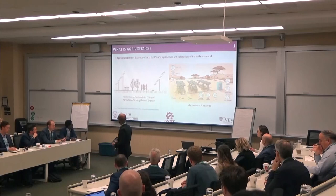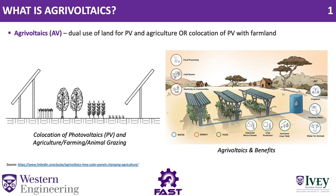So what Agrivoltaics is — as you can understand from the word itself — it comes from agriculture, 'Agri', and from photovoltaics, 'Voltaics'. So it is basically a combination of agriculture and photovoltaics. It is the dual use of land for the purpose of agriculture and electricity generation through PV. These pictures basically represent what an Agrivoltaic field looks like. You have solar PV on farmland, and then you grow crops underneath them. The idea is that those solar panels are strategically placed so that there is no adverse impact on farmland.